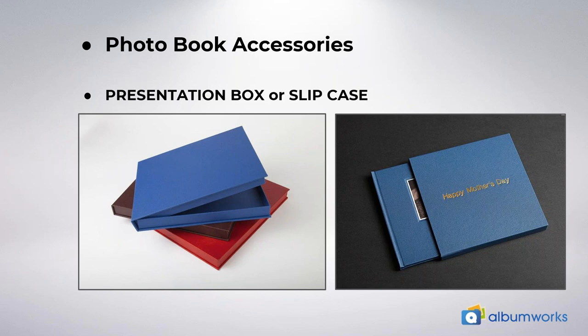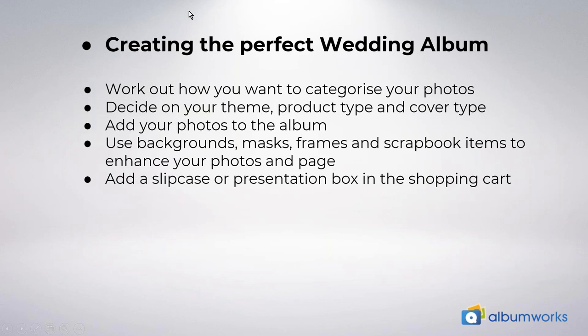That's pretty much all we have time for today. If you have any questions please send them through now and I'll go through them once I've done a quick recap. So just to go through what we talked about: the first thing to do is work out how you want to categorise your photos, decide on your theme, product type, and cover type, add your photos to the album a page at a time, then use your backgrounds, masks, frames, and scrapbook items to enhance your photos on the page. You can then add a slip case or a presentation box once you're in the shopping cart.